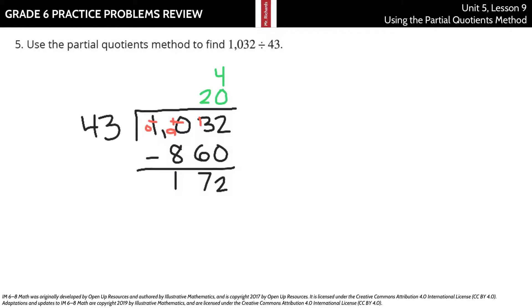Well, 4 times 43 is exactly 172, which gets us our remainder of 0. And so, now that I have the remainder of 0, I can look at these and go, okay, 20 plus 4 is 24, which is my solution.